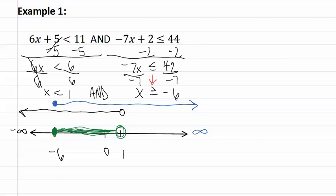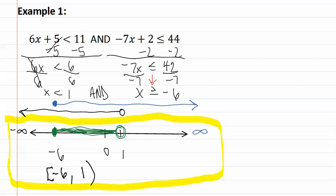We can only graph the portion that makes both of them true. Now we write our interval notation. We start with a bracket for the closed dot, negative six, comma, one, and a parenthesis for the open dot. And this gives us our answer.